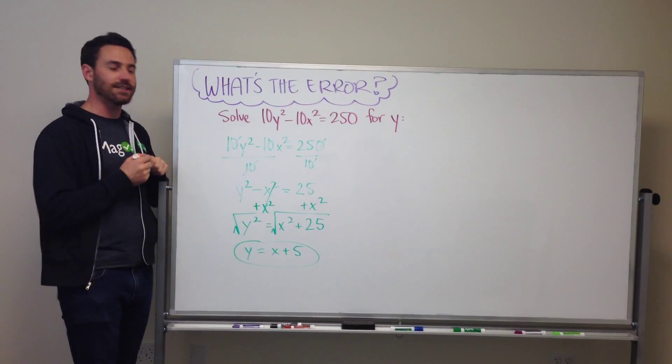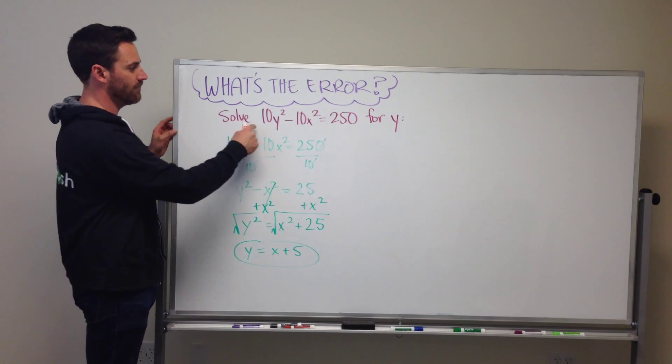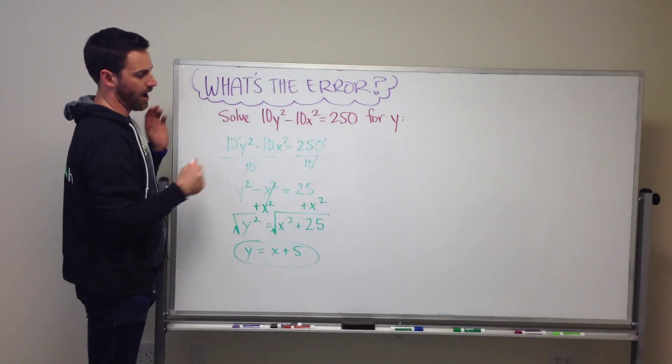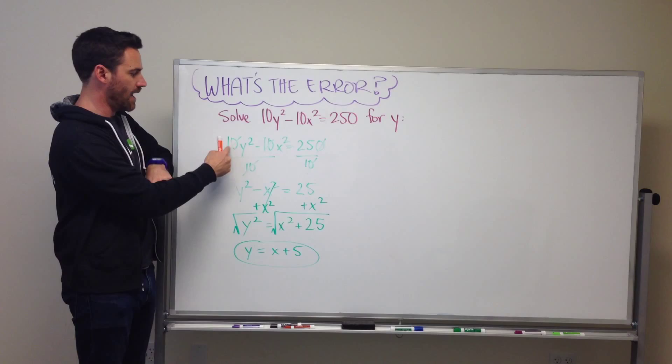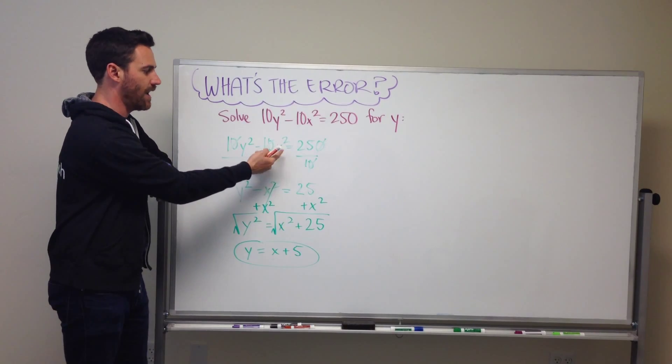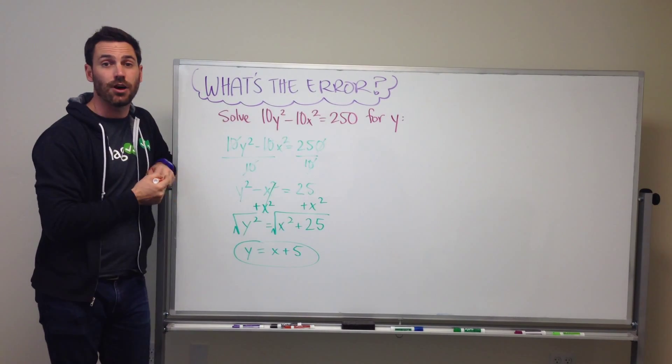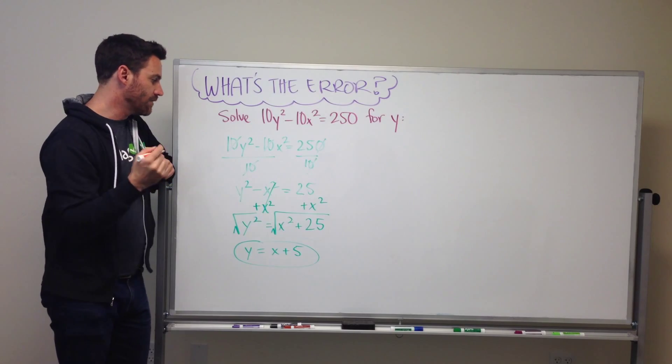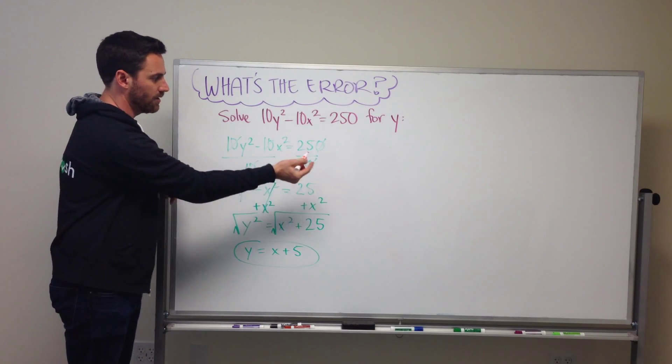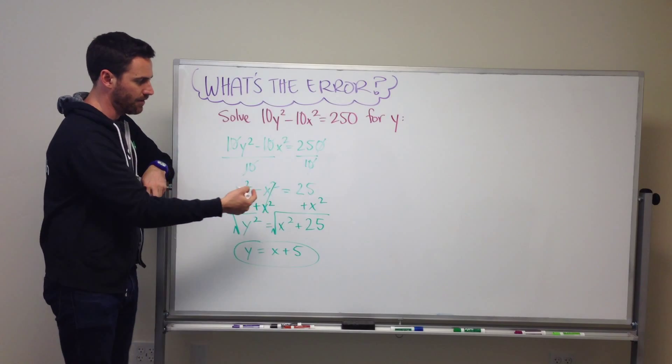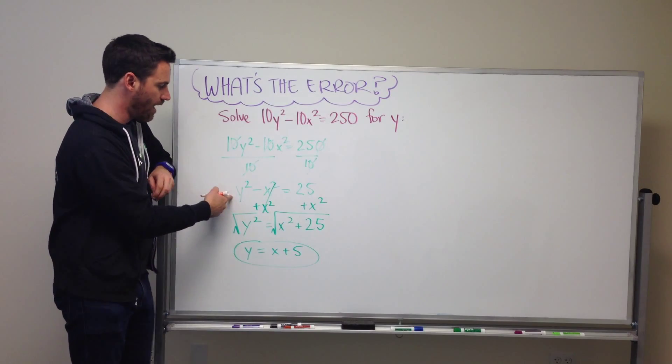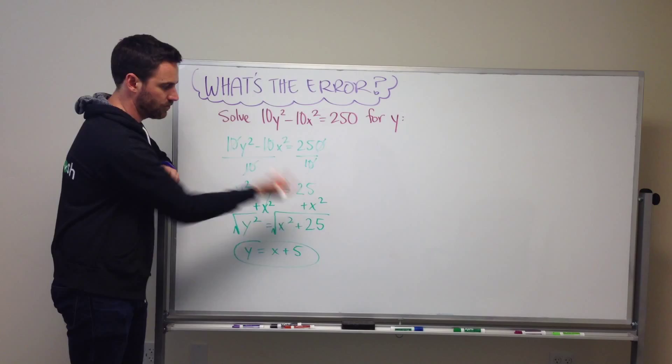So the question says solve this equation for y. So the equation is 10y² - 10x² = 250. So first they're dividing by 10 on either side which is good to simplify the problem. So then they end up with y² - x² = 25.